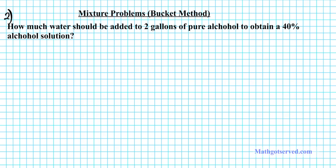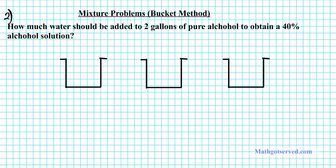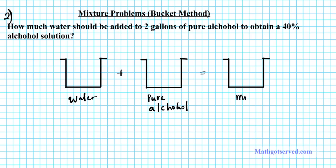We're going to be making use of the bucket method to represent the equation. I have my three buckets here. The two on the left are the solutions I'm going to mix together, and then this is the mixture that I have. So we're mixing together two types of solutions — water and pure alcohol — and then we have a mixture of water and alcohol.